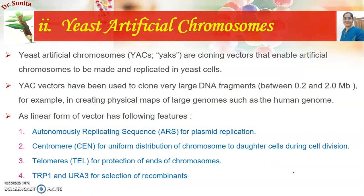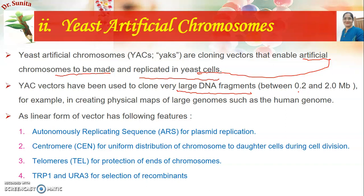The second type under artificial chromosomes is yeast artificial chromosomes (YACs). YACs are cloning vectors that enable artificial chromosomes to be made and replicated in the yeast cell. YAC vectors have been used to clone very large fragments of DNA. While BAC vectors carry 100 to 300 kb, YACs can accommodate 0.2 to 2 megabase pairs — a comparatively very large size — and are used for creating physical maps such as the human genome map.